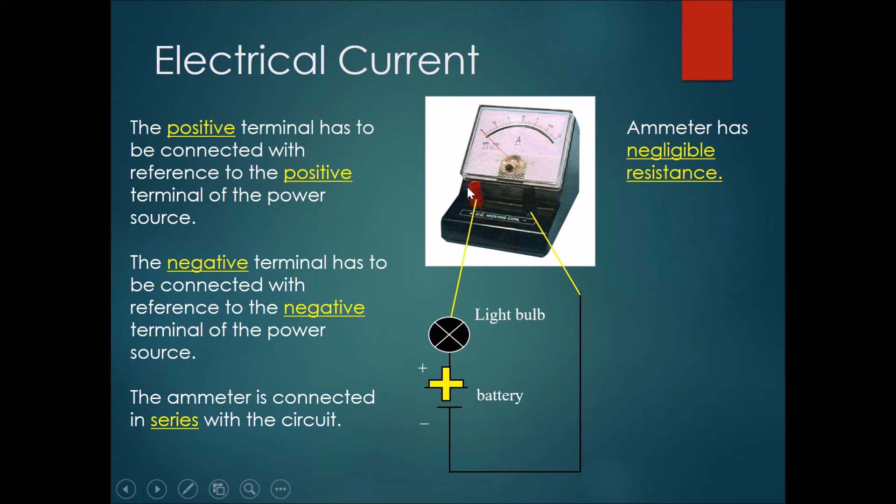Here's the proper way to connect the ammeter. The positive terminal of the ammeter has to be connected with reference to the positive terminal of the power source, which means this part over here, the positive terminal of the ammeter, has to be linked to the positive terminal of the battery. Positive to positive.